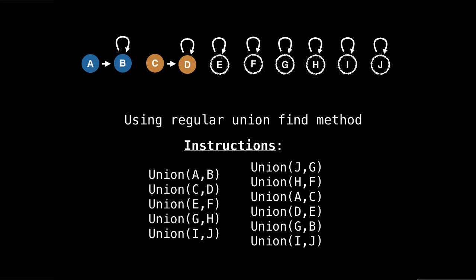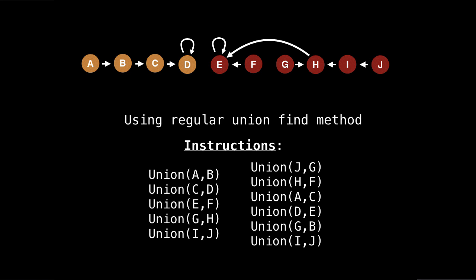So I'd start by getting all these pairs of components. And then now executing the instructions on the right. And this is the final state of our union find. And note that if I'm trying to determine what groups say A and J are in, then I have to traverse a whole bunch of different nodes. So J goes to I, I goes to H, H goes to E.